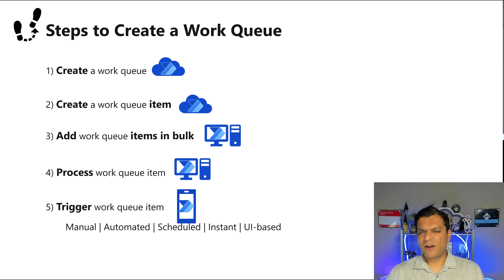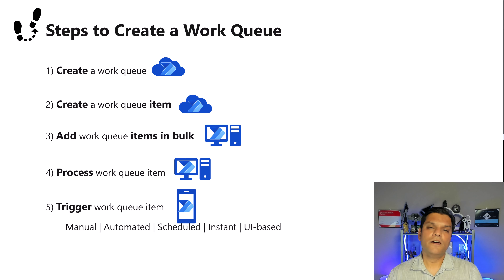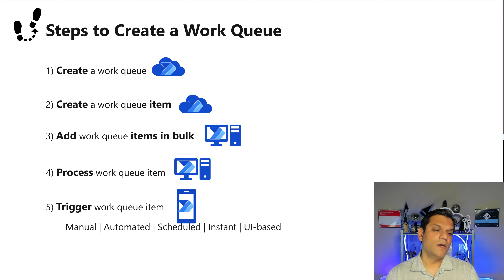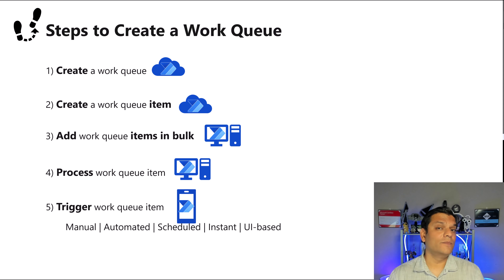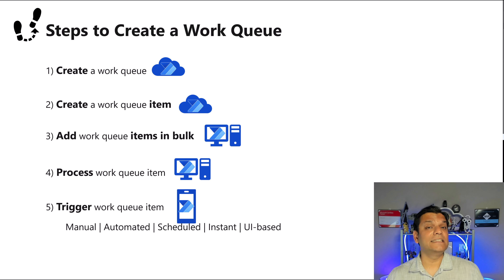There are some neat benefits that come along with work queues. I like the centralized monitoring functionality, which I'll show you examples of. You can increase efficiency and scalability — it doesn't just have to be small queue items, they can be pretty large as well, and you can even submit them in bulk, which I'll show you how to do in Power Automate for desktop.